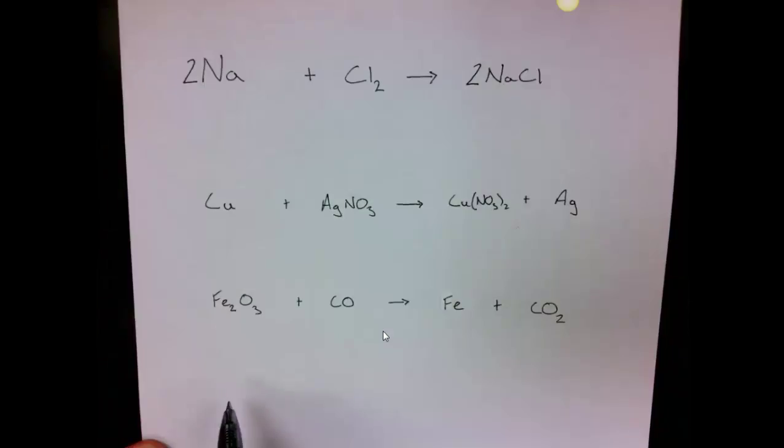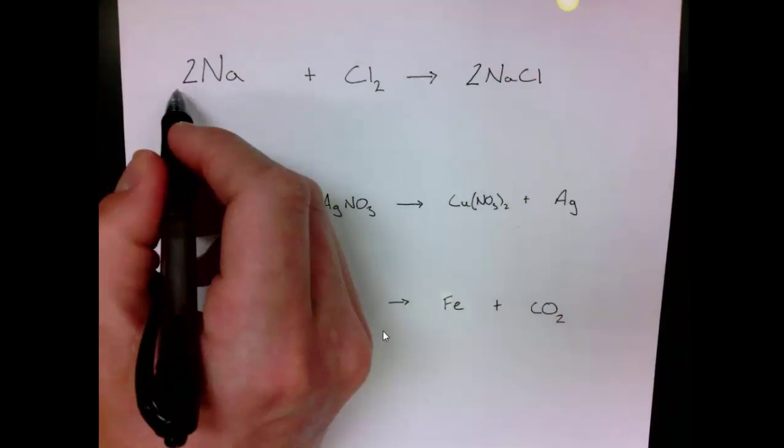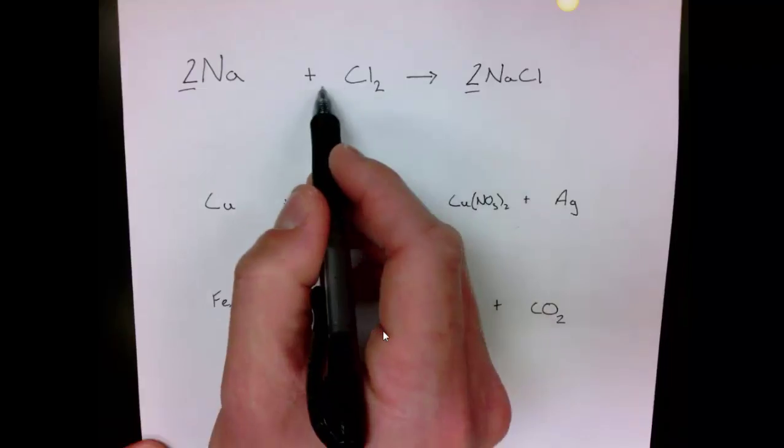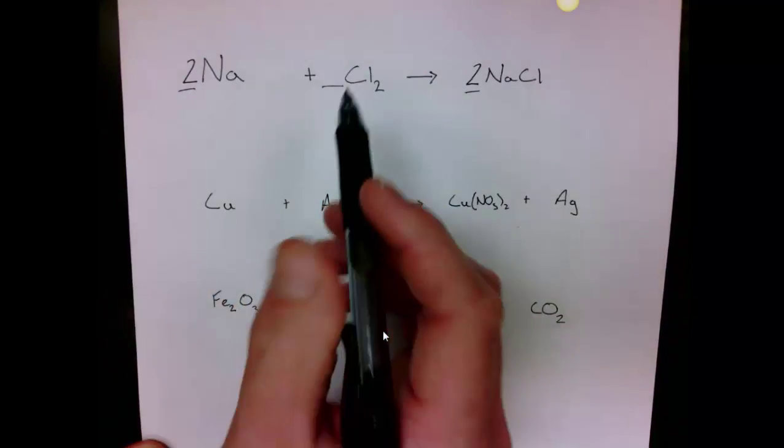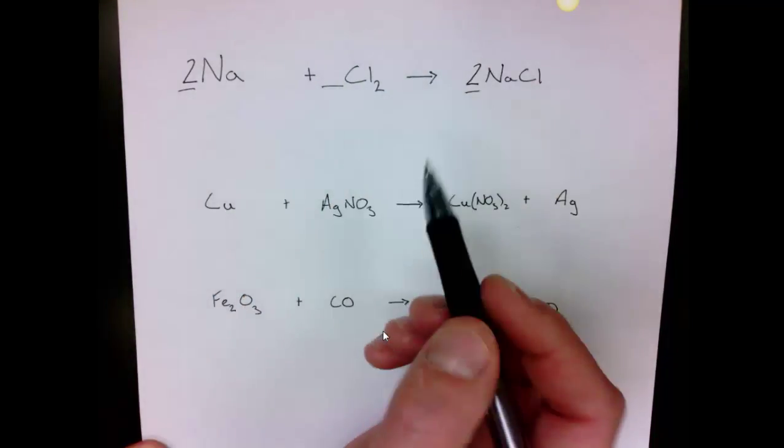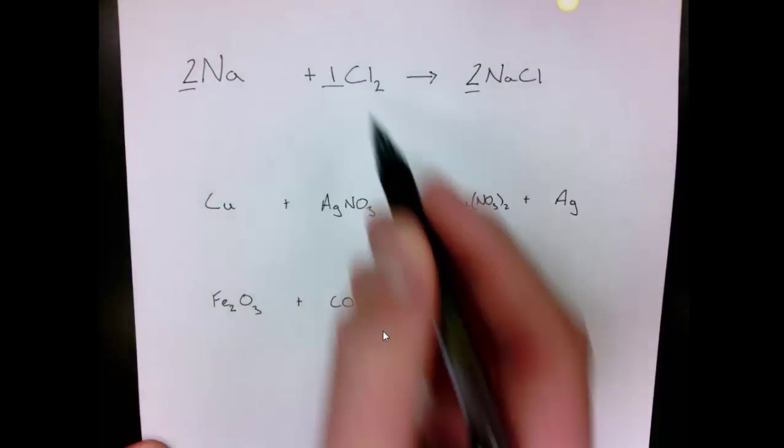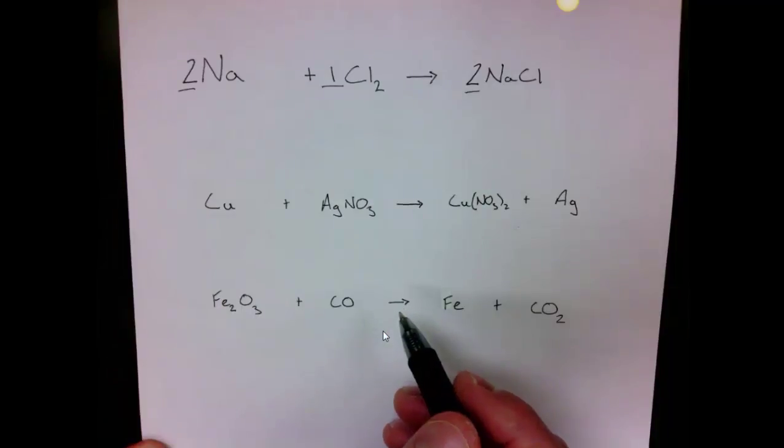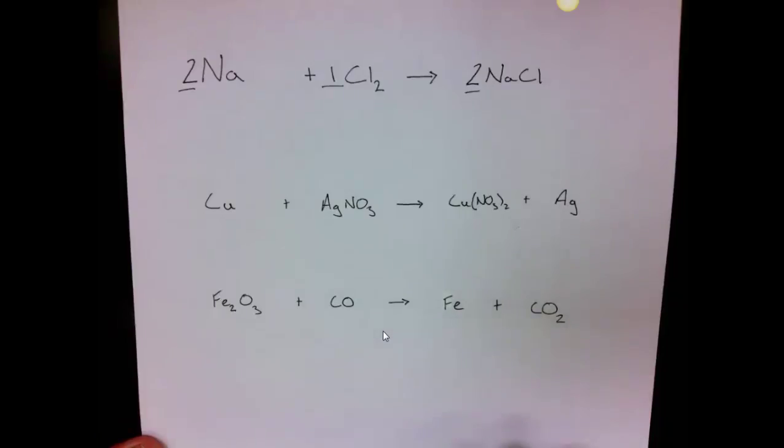So now that's a balanced chemical equation using the coefficients. Sometimes you have worksheets that have blanks that you fill in. You wouldn't put anything here; if you had to, you'd put the number one, that's an imaginary one, but we don't need to include that and try to avoid including ones as you work through these.